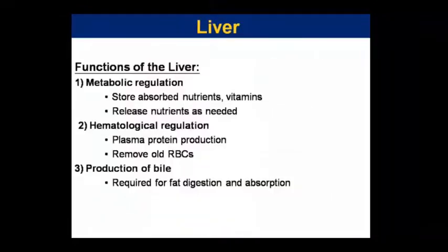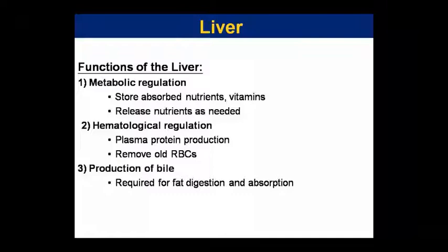After pancreas, now liver and gallbladder. What are the functions of the liver? First: metabolic regulation — nutrients and vitamins are absorbed, stored, and released. Second: hematological regulation — carbohydrates, fat, and proteins are metabolized; plasma proteins are produced and old RBCs are removed. Third: bile production, which is helpful for digestion and absorption.